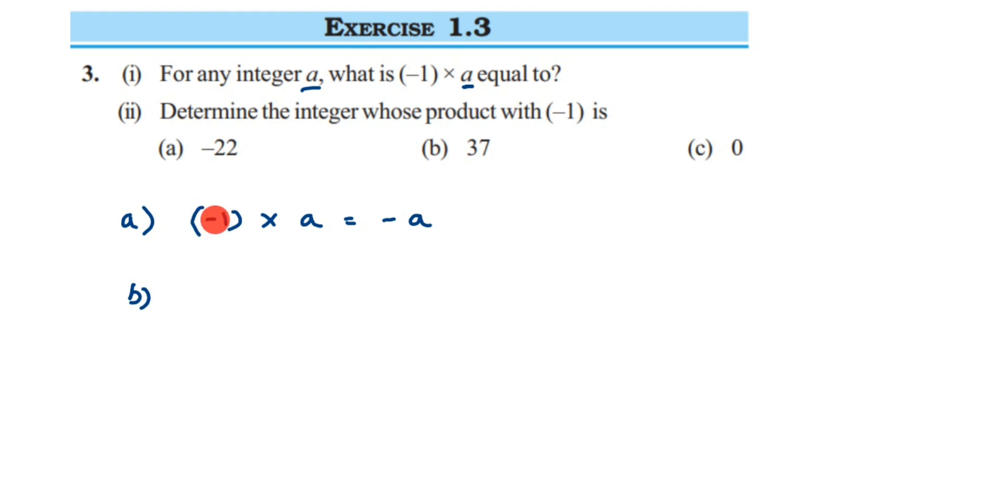Already in the first question we have multiplied minus one with an integer. So here they have given a specific integer. In the first question they have not given an integer, but here they have given the integer. So what will be your answer? It's very simple.